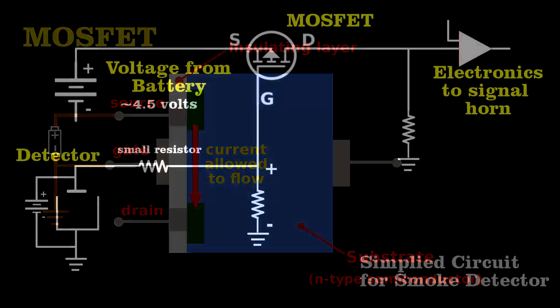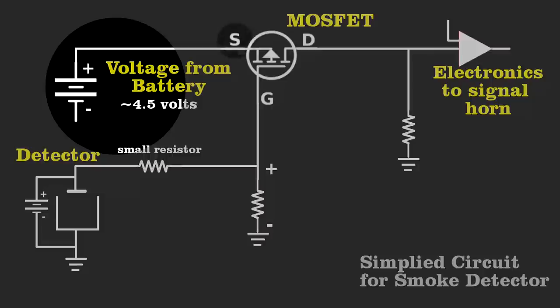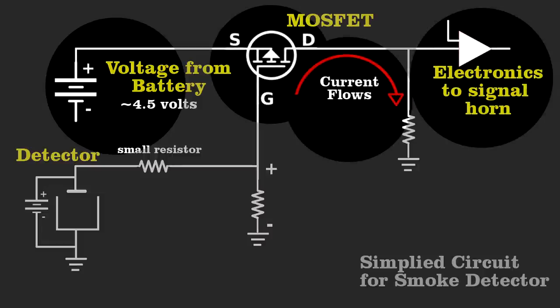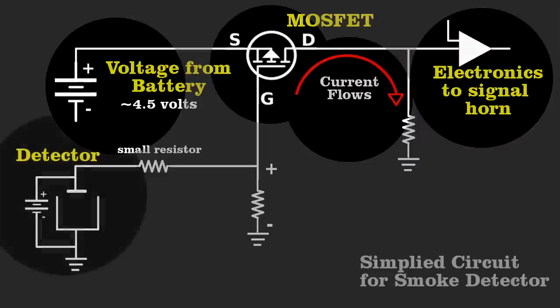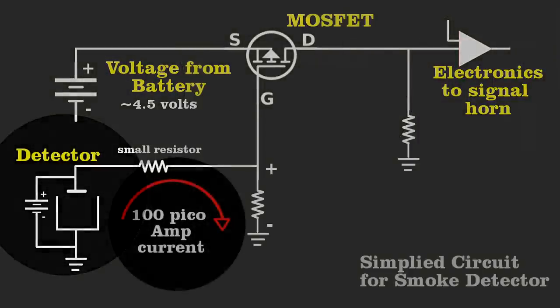In a circuit, we use the 9-volt battery to generate a potential difference between the source and the gate. It biases the gate so that the current flows through the MOSFET, thus turning on the horn. So we counter that with a current flowing from the detector.